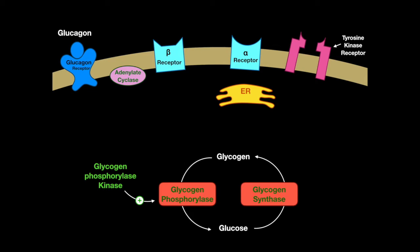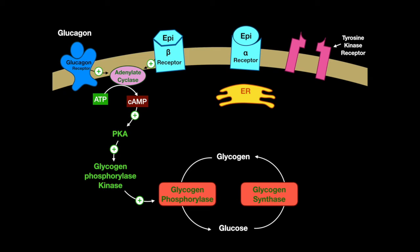Glucagon outside the liver cells binds to the glucagon G-protein-coupled receptor. This stimulates adenylate cyclase, which converts ATP to cyclic AMP. Epinephrine on the beta-adrenergic G-protein-coupled receptor also stimulates adenylate cyclase's conversion of ATP to cyclic AMP. High cyclic AMP concentrations stimulate protein kinase A, which stimulates glycogen phosphorylase kinase. Additionally, epinephrine binds to alpha-adrenergic receptors, which stimulates the endoplasmic reticulum to release calcium. Calcium itself stimulates glycogen phosphorylase kinase, and calcium also binds to calmodulin, which too stimulates glycogen phosphorylase kinase.